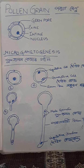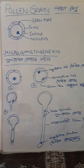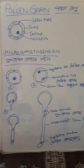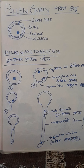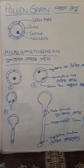Good morning students! Today let's start the pollen grain and microgametogenesis process. Pollen grain means the male spore, which undergoes microgametogenesis — that is our male gamete formation.